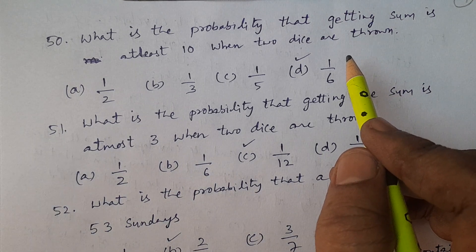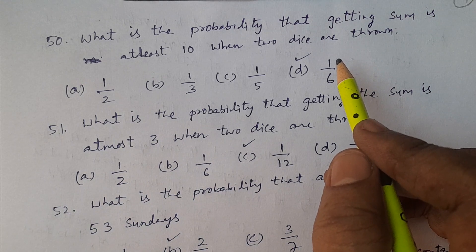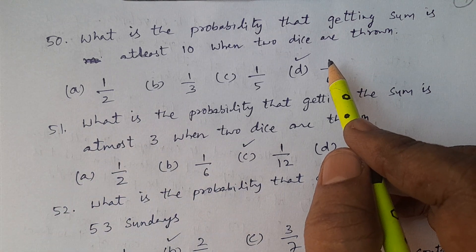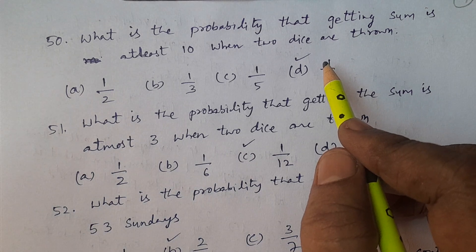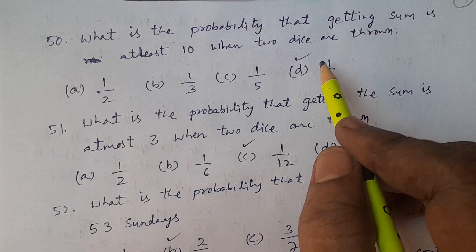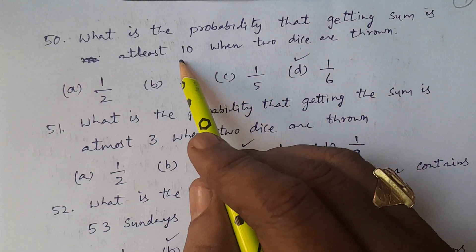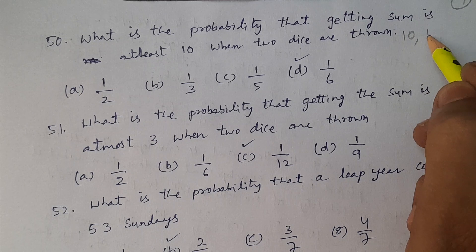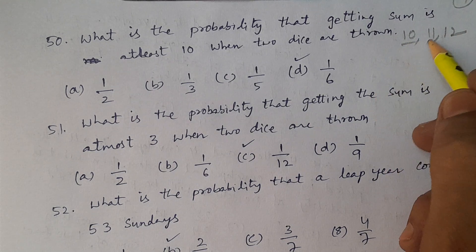I have indicated in a previous class that for 'at least' with small values, it is better to use the complement. But here, at least 10 means the sum may be 10, 11, or 12 — three possibilities — so we can count directly.